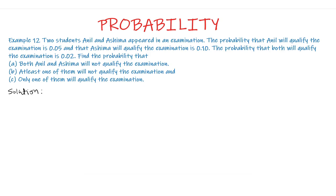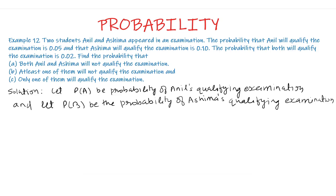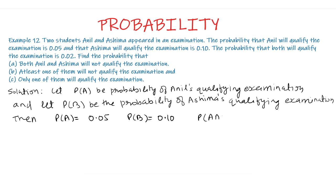Let PA be the probability of Anil qualifying the examination and let PB be the probability of Asima qualifying the examination. It has been given that P(A) = 0.05 and P(B) = 0.10. It has also been given that the probability that both will qualify the examination is 0.02, which is P(A ∩ B) = 0.02.